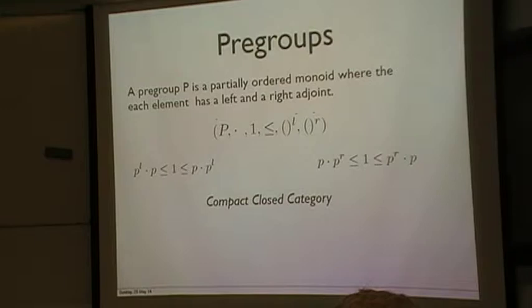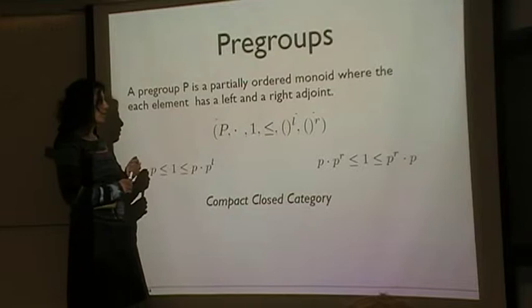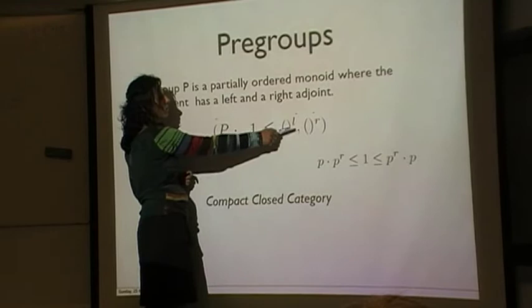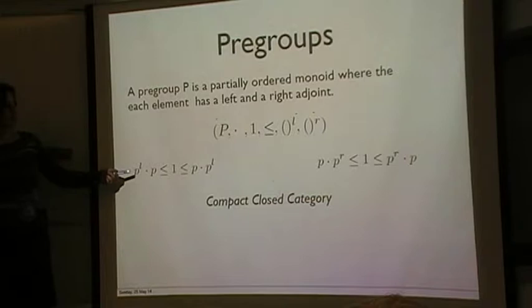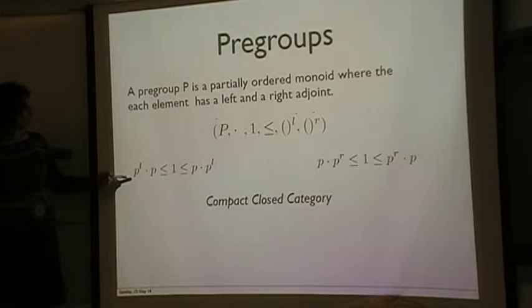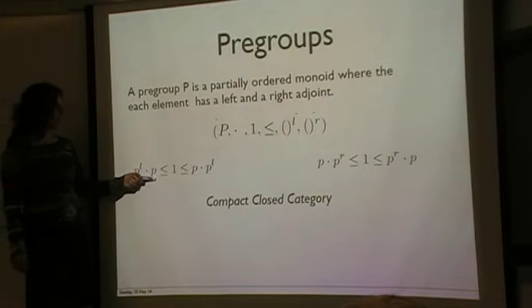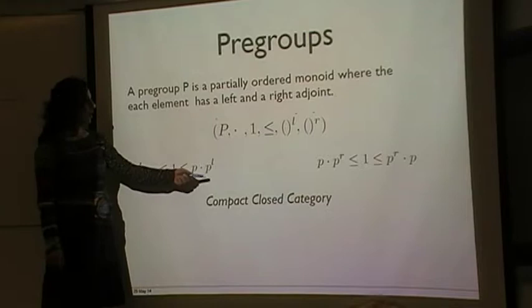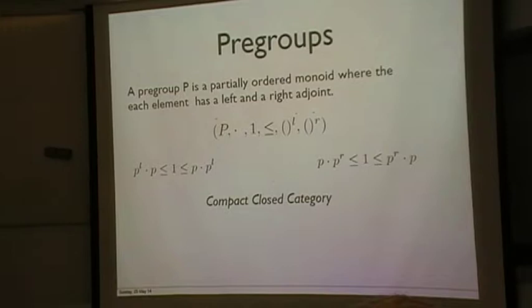And then pregroups, though, two are partially ordered monoids where instead of the multiplication having a left and right adjoint, every element of the pregroup has a left and right adjoint. And then you denote those adjoints like this, unary operators. And then the adjunction inequalities become four inequalities like so. So if you multiply the left adjoint of a type P with P from the left, then you will assign it to one. And then if you multiply the left adjoint of P with P from the right, you will call above one, asymmetrically for the right adjoint.